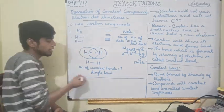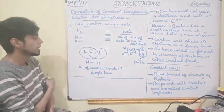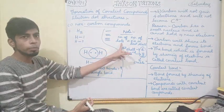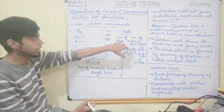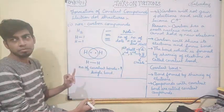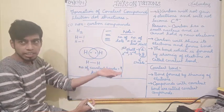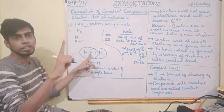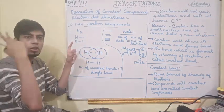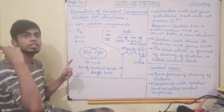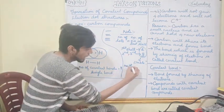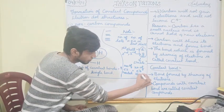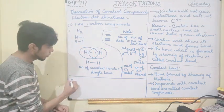One important clue: the number of electrons an element needs equals the number of electrons it will share. Hydrogen needs 1 electron, so it shares 1. If an element needs 2 electrons, it shares 2; if it needs 3, it shares 3.